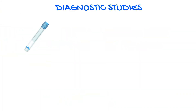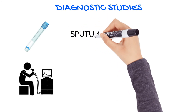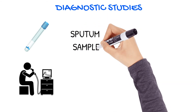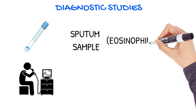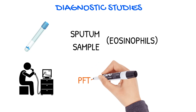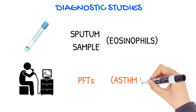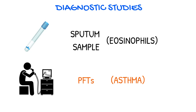Other diagnostic studies include sputum specimens and pulmonary function tests. The sputum samples are tested for eosinophils. Pulmonary function tests, or PFTs, are indicated if asthma is suspected.